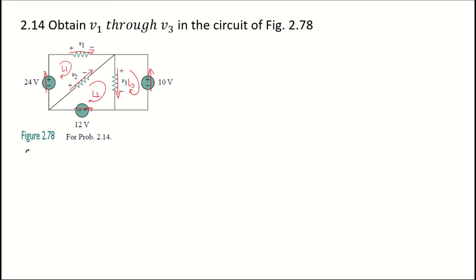At loop 1, we have the voltage drops of V1 and V2. V1 has the same direction as loop 1, so that would be positive V1. V2 opposes the direction of the loop, so it is negative V2, equal to the voltage supply of 24 volts, which has the same direction as the loop — positive 24 volts. This is Equation 1.